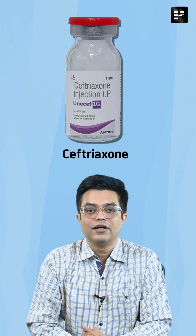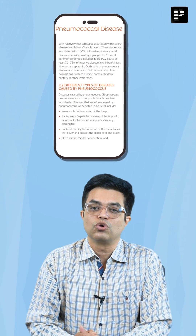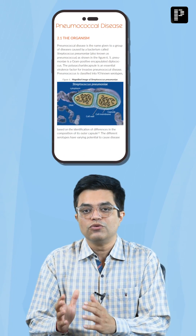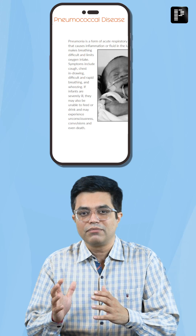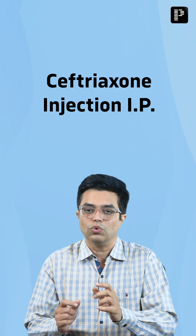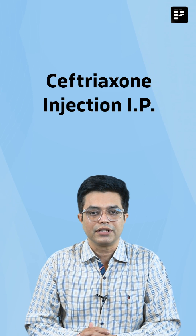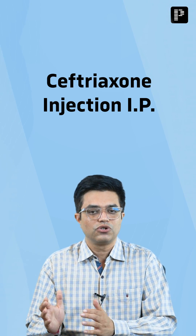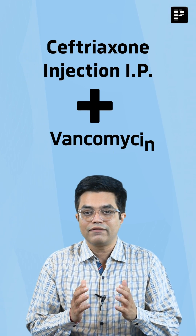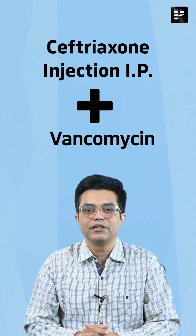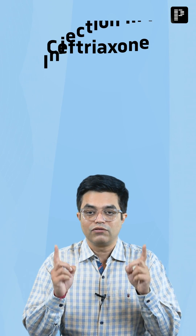On the other hand, vancomycin is given basically to cover resistant pneumococcus. The incidence of resistant pneumococcus traditionally in India has not been very great, and that is why the traditional method of management has been IV ceftriaxone alone. This is what Indian textbooks like OPG also say — that IV ceftriaxone should be the initial therapy of choice, and you add vancomycin if there is no improvement in 48-72 hours.